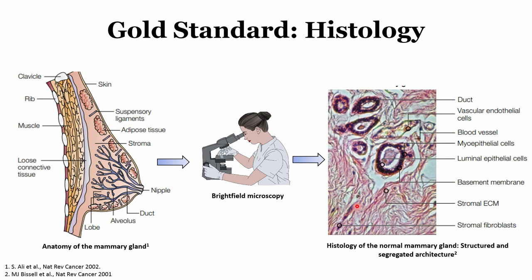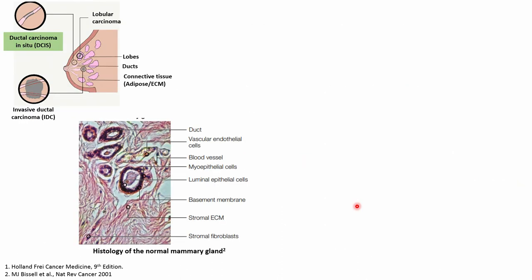Now let us see the different kinds of histopathological results for abnormal or diseased cases. The first is ductal carcinoma in situ. Ductal carcinoma in situ means the tumor is present within the ducts — visible as a gray part on the inner surface of the ducts — and is not yet spreading outside the ducts. That is the important way to differentiate this from other types of breast cancer.